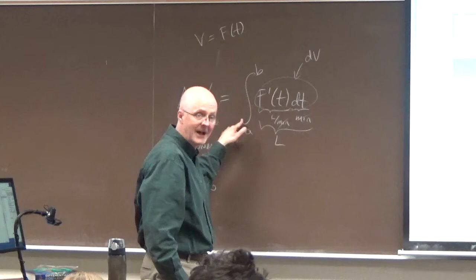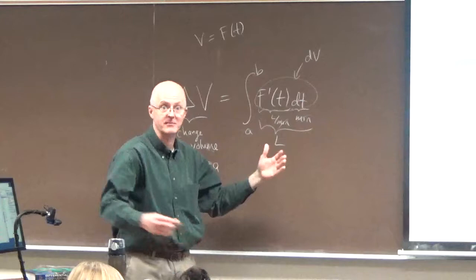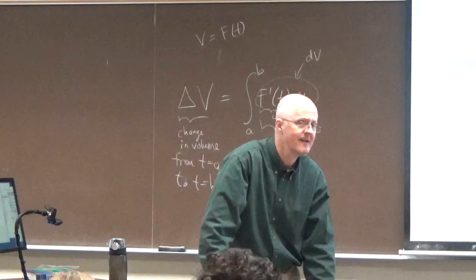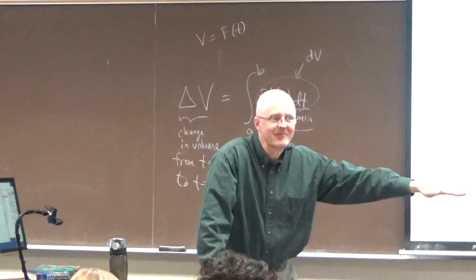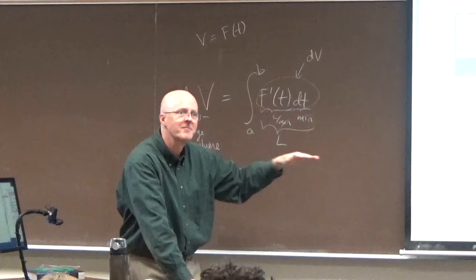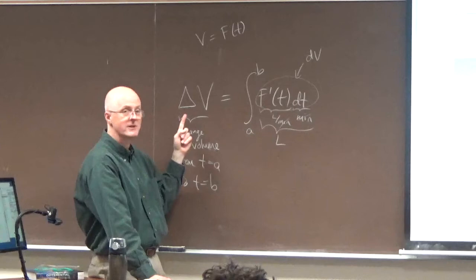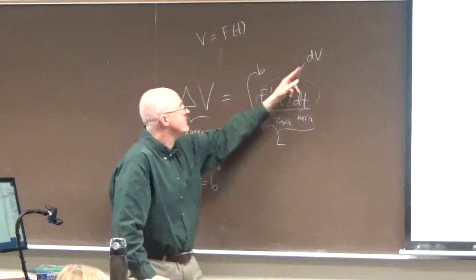If you imagine the integral as adding things up, you're saying: to get the total change in volume, add up the little changes in volume. It's almost as if the FTC is obvious. The rigorous proof is hard — we won't do it here, though I'll outline it in Calc 2. Intuitively: to find the total change in volume, delta-v, over a finite interval, add up the infinitesimally small changes in v over infinitesimally small changes in time. It's essentially volume equals rate times time.